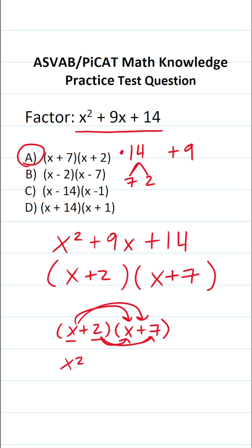x times x is x squared. x times 7 is 7x. 2 times x is 2x. 2 times 7 is 14. This becomes x squared. 7x and 2x are like terms, so we can add them.